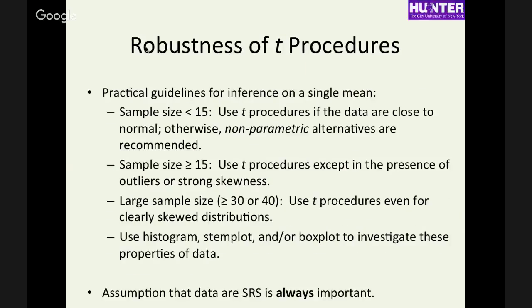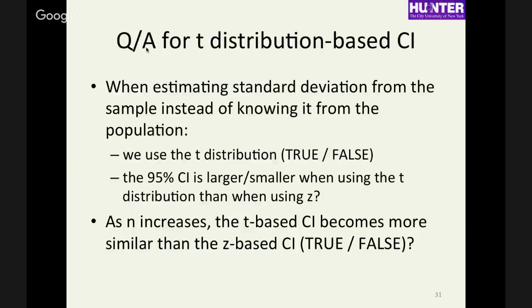Here are just some sort of rule-of-thumb practical guidelines. If you have a sample size of less than 15, use the T procedures if your data are close to normal. Otherwise, you'll need what we call a non-parametric alternative. If sample size is more than 15 but less than 30, then you can use the T procedure, unless there are major outliers or skewness. And if you have a large sample size greater than 30 or 40, then you can use the T distribution anyways, even in the presence of outliers and skew. But that assumption of the statistically random sample is always important. If that doesn't hold, then all bets are off.